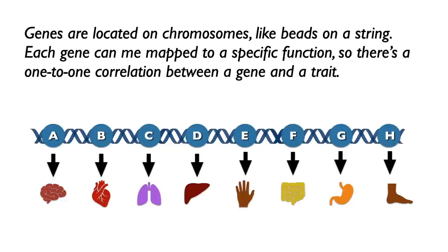Furthermore, this interpretation of genetics has led to another misconception. Here's a common idea: that genes are located on chromosomes like beads on a string, and each gene can be mapped to a specific function. So there's a one-to-one correlation between a gene and a trait. Once again, that's totally wrong, except perhaps in a few special cases. It's a model that might have been useful in the early days of genetics, but not anymore. We really don't think of genes as beads on a string — it's a much more complex relationship going on in the arrangement of genes on chromosomes.